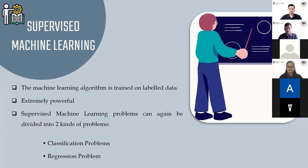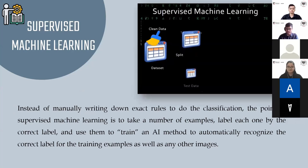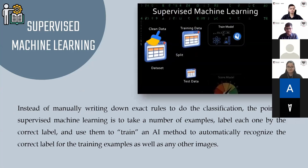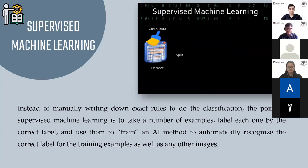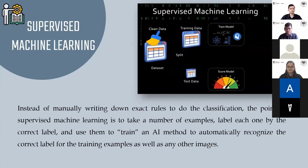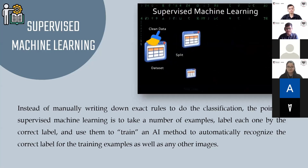Supervised machine learning is one of the most basic types. The algorithm is trained on labeled data. Even though the data needs to be labeled accurately, supervised learning is extremely powerful when used correctly — human teaching machines. Instead of manually writing rules for classification, the idea is to take examples, label each with the correct label, and use them to train an AI method to automatically recognize the correct label for any new input. Supervised ML problems can be divided into classification problems and regression problems.